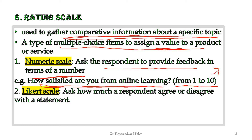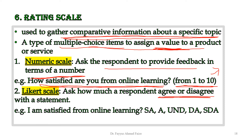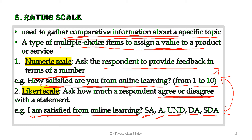The second type is the Likert scale, in which the respondent responds in the form of different statements — agree or disagree statements. For example, asking the same kind of question but now on a Likert scale: 'I am satisfied from online learning,' and the student has to agree or disagree. The options are: strongly agree, agree, undecided, disagree, and strongly disagree.